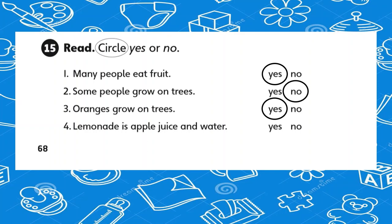Number four, lemonade is apple juice and water. To prepare a lemonade you need apple juice. Necesitan jugo de manzana para preparar una limonada. No, you need lemon juice and water.